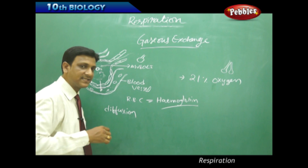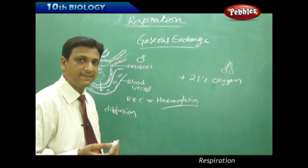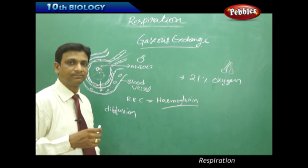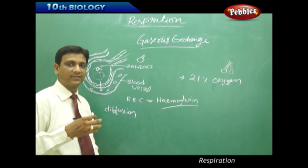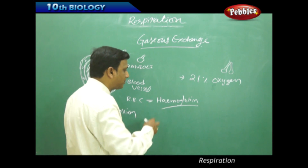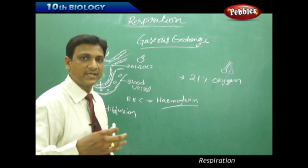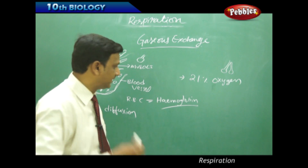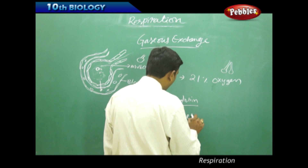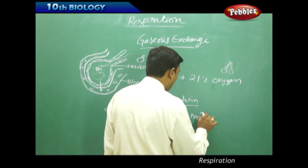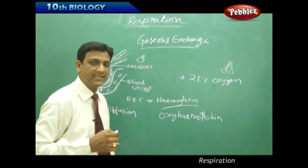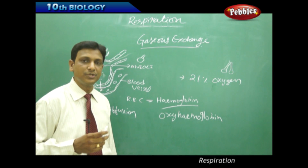As soon as oxygen enters the blood, hemoglobin binds it. Hemoglobin contains iron ions, and this iron has the affinity to bind with oxygen. The oxygen bound to hemoglobin forms oxyhemoglobin. This oxyhemoglobin is then carried to the tissues.